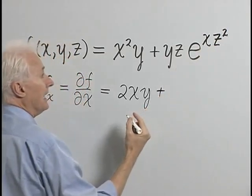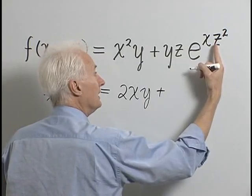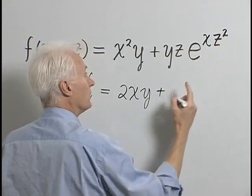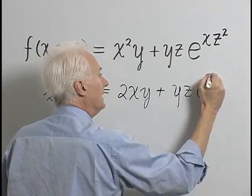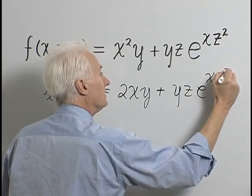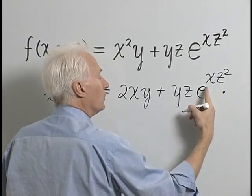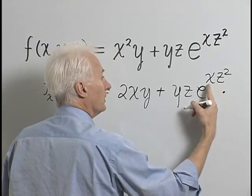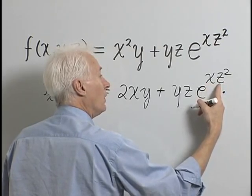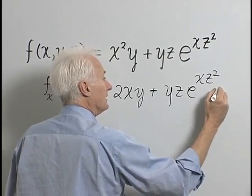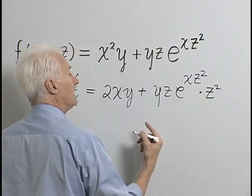There's an x in the exponent. y and z are constant, and z² in the exponent is treated as a constant. So we have yze^(xz²) multiplied by the derivative of xz² with respect to x, which is simply z² — giving us yz · z² · e^(xz²) for the partial derivative with respect to x.